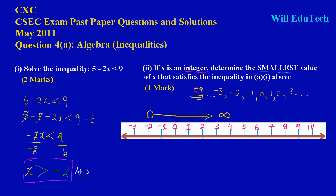This is the keyword: if x is an integer, determine the smallest value of x that satisfies the inequality. Since x is greater than -2, then if x is an integer, the next integer going to -2 in this direction and approaching -2 from the right-hand side going to my left, the integer that is next to -2 would be -1.